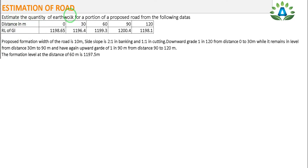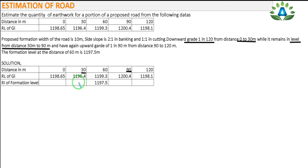We are going to calculate the total quantity of earthwork for a portion of the proposed road from the following data. Formation width B = 10 m; side slope for banking = 2:1; side slope for cutting = 1:1. The formation level at a distance of 60 m is 1197.5 m.